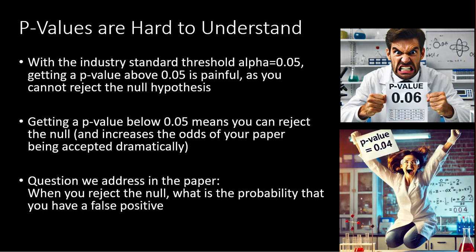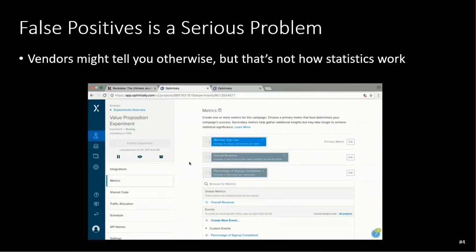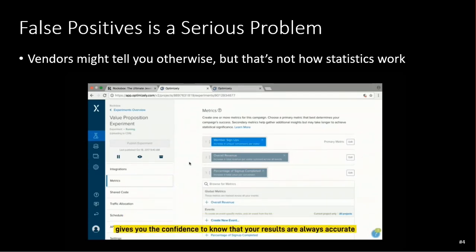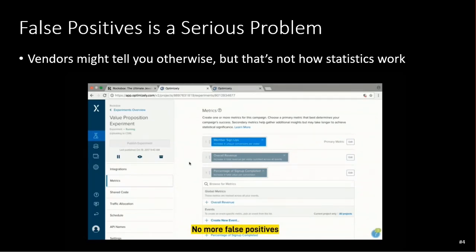The question we address in the paper is: when you reject the null, what is the probability that you have a false positive? That's a serious problem, and even though vendors might tell you otherwise, that's not how the statistics work. The Statient Engine is our unique proprietary statistical model that gives you the confidence to know that your results are always accurate — no more false positives.